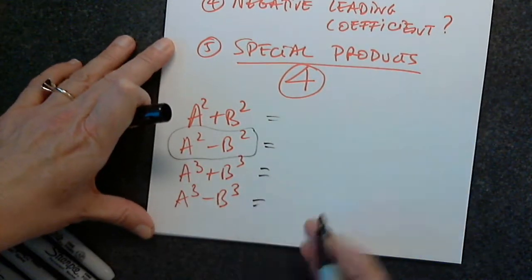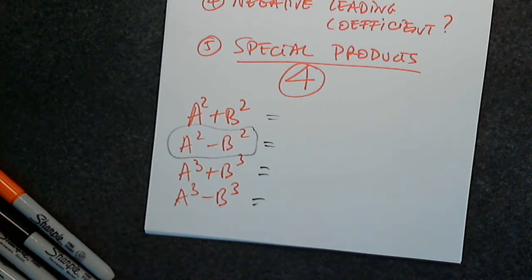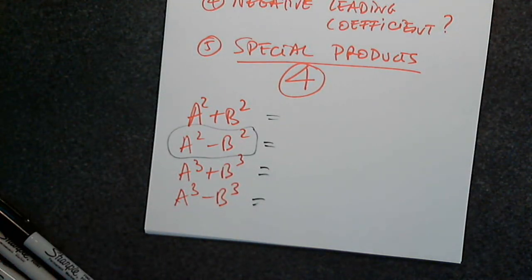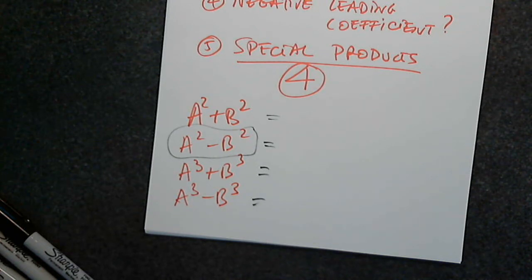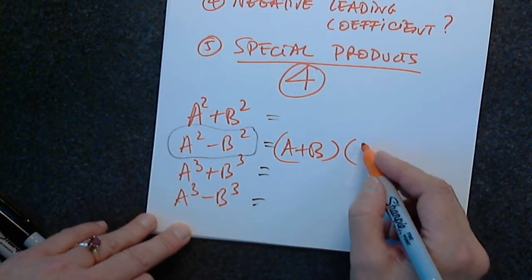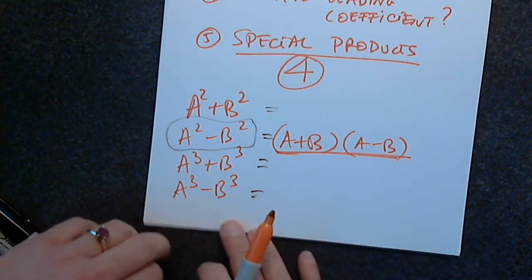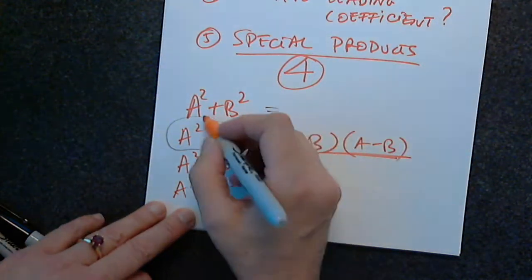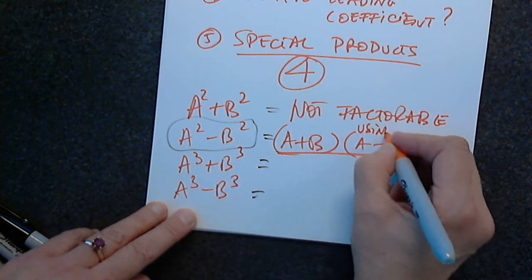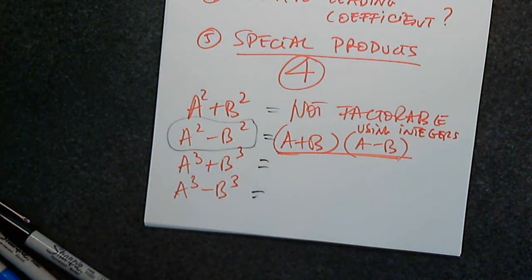Do we know what these special products are equal to? Last time we talked about this. Please tell me how we factor the difference of squares — it's very important to remember this. It should be in your notes or on the handout. So moving forward, we have to remember this. This happens to be a sum of squares — not factorable, to be exact, using integers.